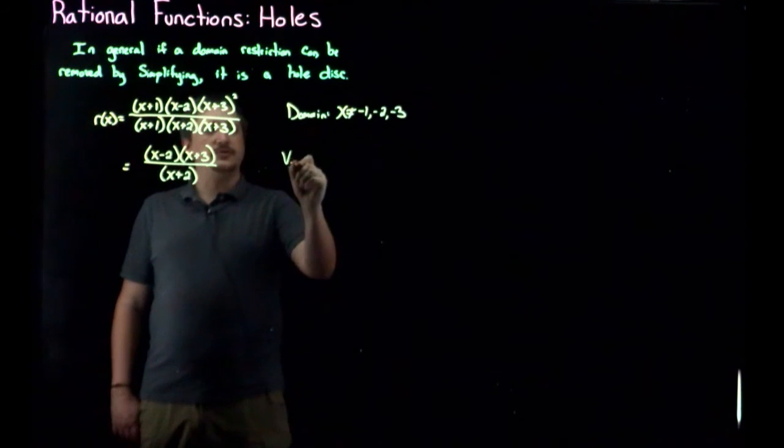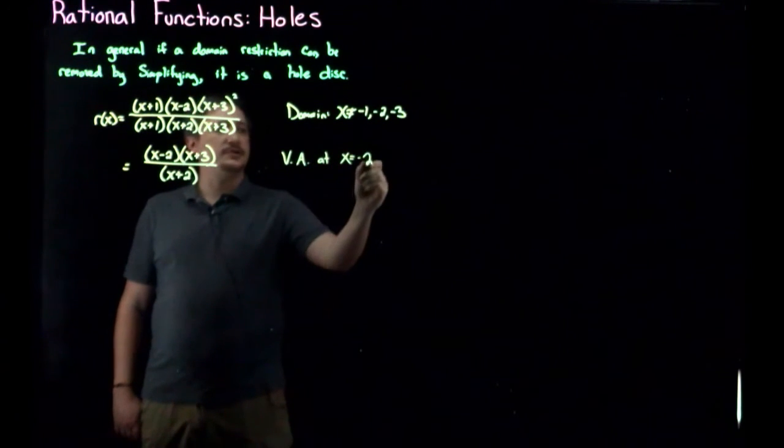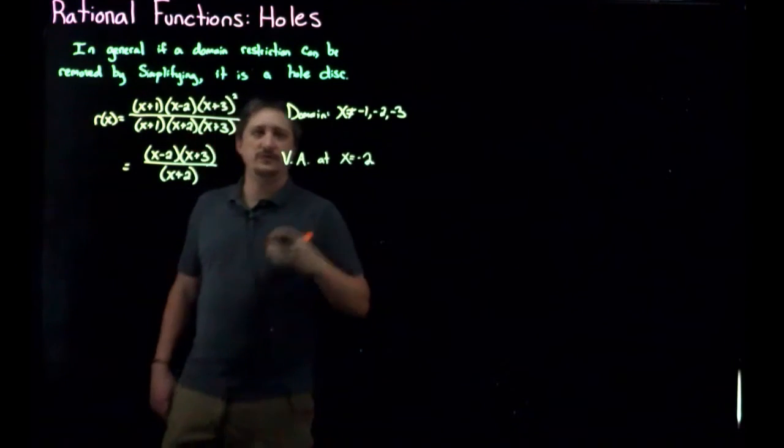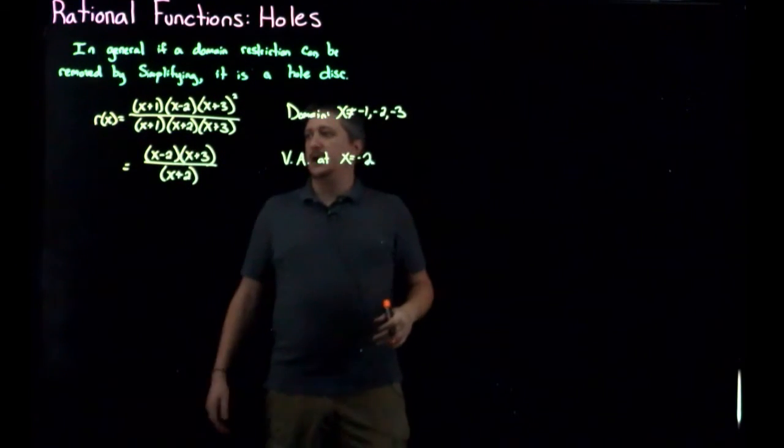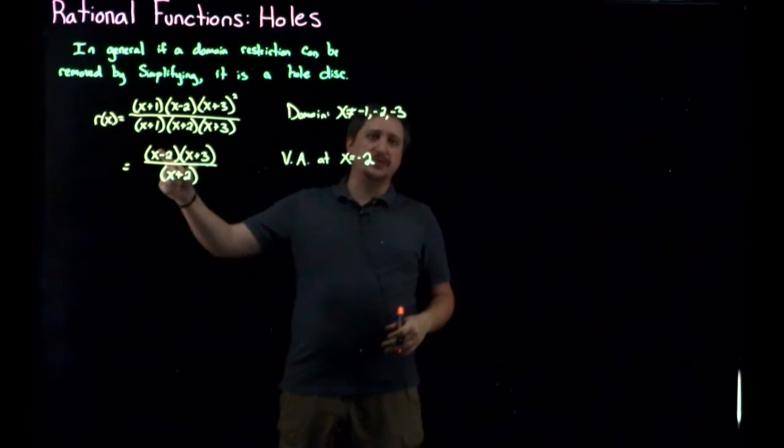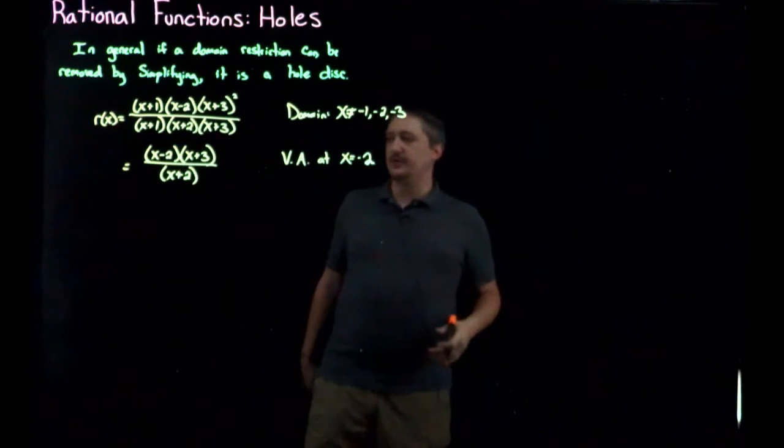Here we saw in the last video there's a vertical asymptote at x equals negative two, right? Because if we tried to plug in negative two, even though we can't because it's a domain restriction, but if we sort of hand wavy tried, we would get something non-zero over zero, top and bottom both continuous. So it is, that's what's going to give us a vertical asymptote.